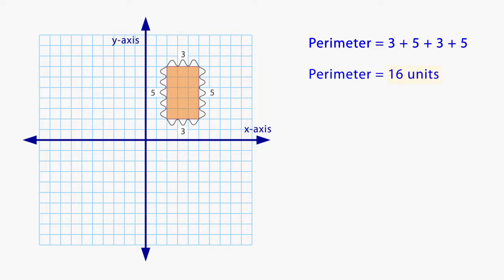Area means the size of an object. What is the area of this rectangle? Each square on the coordinate plane represents one square unit. If we count the number of squares this rectangle covers, we can find the area. Start in the top left corner. Continue counting. The area of the rectangle is 15 square units.